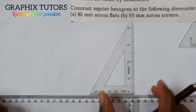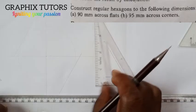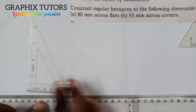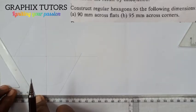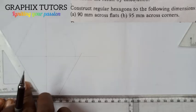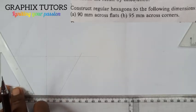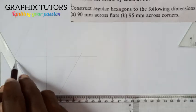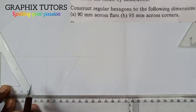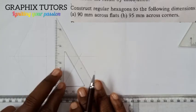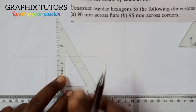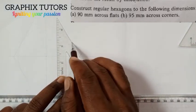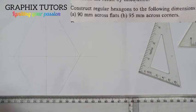Now I'll turn it this way, move it to this point, and do the same thing — draw a line tangential to the circle. I'll then move it up and draw this line also. And again, I'll repeat this so that I have all the lines in place.